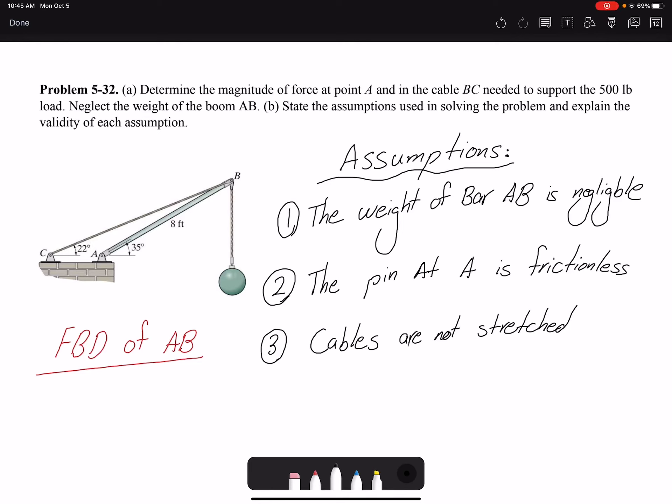Hello everyone, in this video we are going to solve Problem 5-32 of Chapter 5. Determine the magnitude of force at point A and in the cable BC needed to support the 500 pound load.